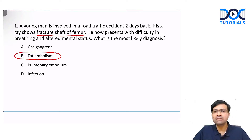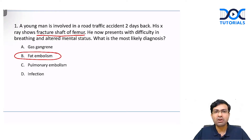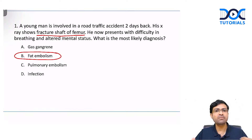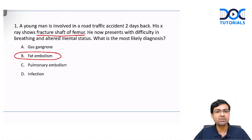Fat embolism syndrome is a very dangerous syndrome where there is a fracture in the shaft of femur. Because of this, bone marrow fat globules extravasate out, and adjacent small blood vessels are damaged. These fat globules enter the vessels and reach the systemic circulation, spreading to multiple areas in the body causing multiple organ damage, and the patient can even die.